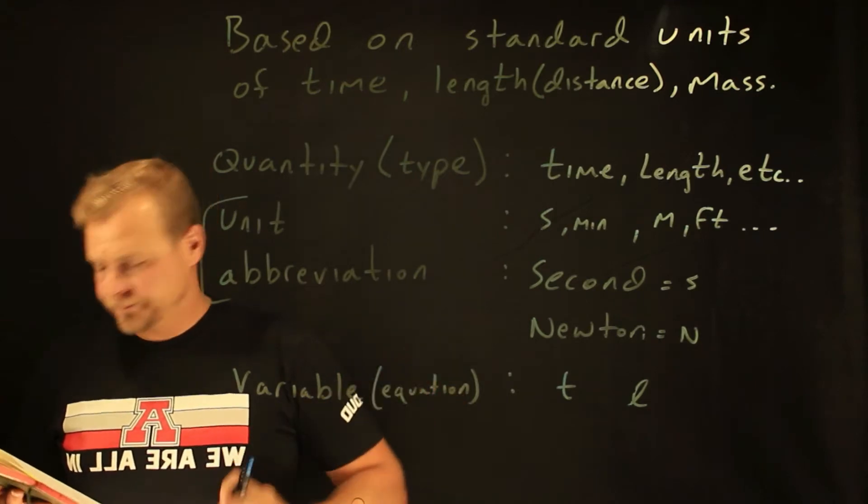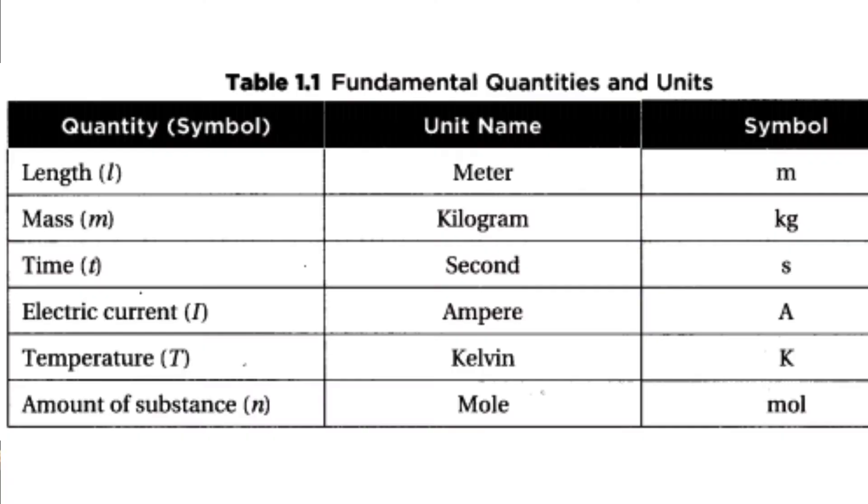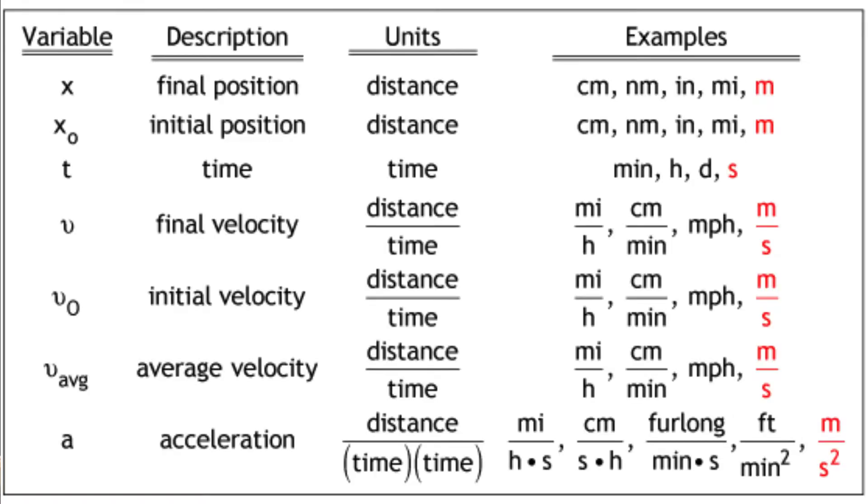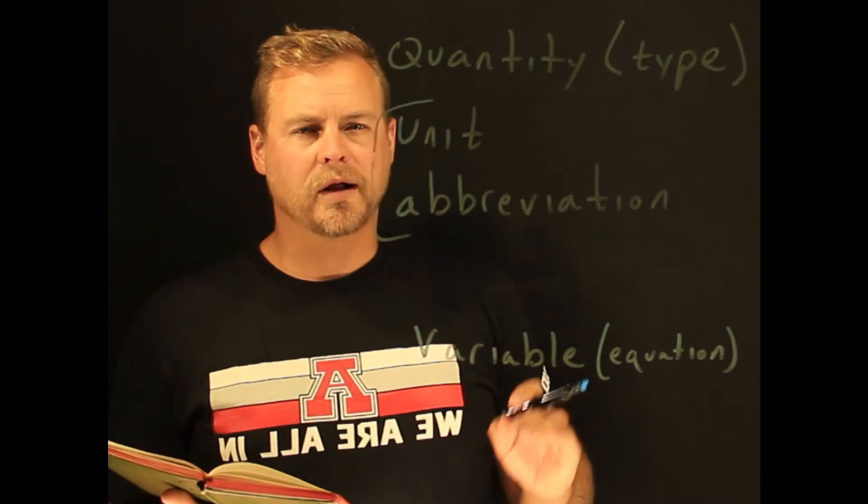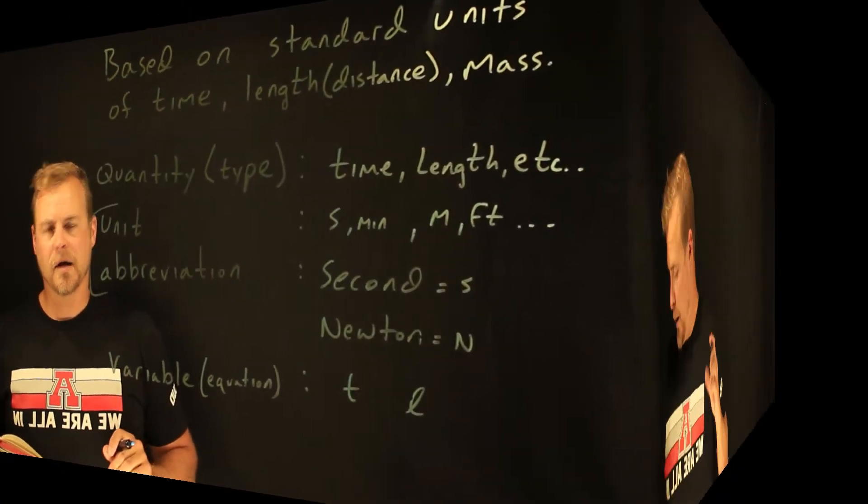So and then the variable is how we will abbreviate the quantity in the formula. So they're all a little bit different. This chart here kind of displays some quantities and units. And this next chart will display all the different types of units that are out there. We'll come across a whole bunch of them. We'll kind of cover them as they come up.